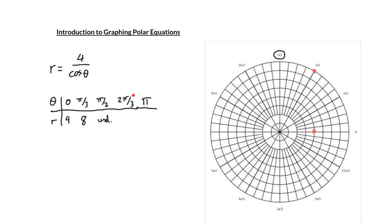Let's plug in the last two points here and see if we can better understand what the graph of 4 divided by cosine theta is. So when I plug in 2 pi over 3, cosine of 2 pi over 3 is negative 1 half. That means I'll get a negative 8 as the radius, and for pi I'll get a negative 4.